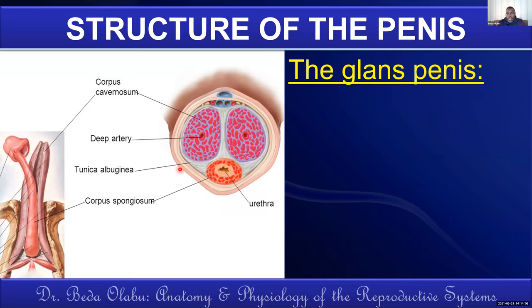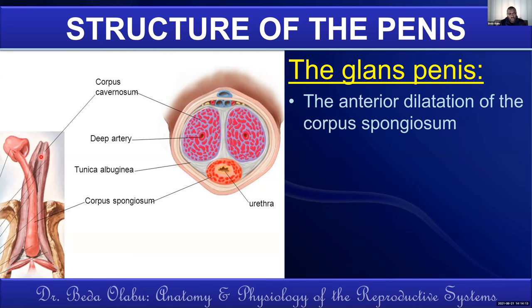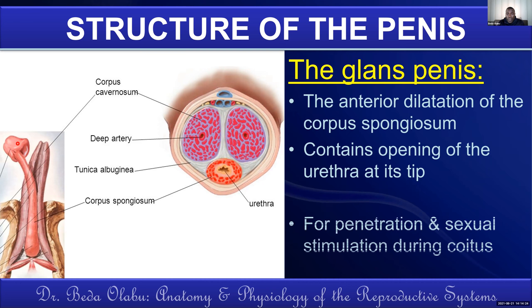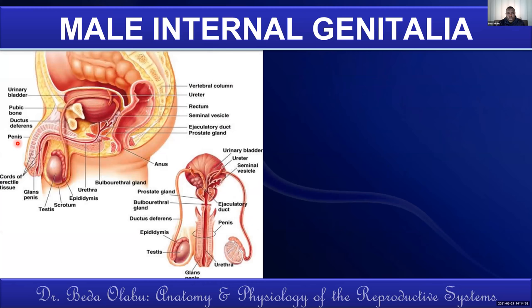The glans penis is the anterior swelling of the corpus spongiosum, with the opening of the urethra at its tip. The glans penis is highly innervated and sensitive, particularly during coitus — it is largely for sexual stimulation during or before intercourse, and also for penetration during intercourse. That is the structure of the male external genitalia.